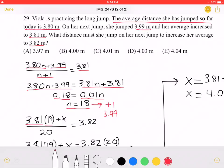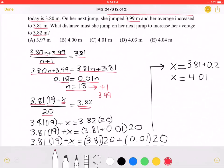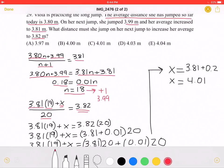19 times her average of 3.81 would be the total distance that she has jumped so far, plus this unknown x, which we're trying to find, over 20, which would be the total number of jumps with this one extra jump. This average we want to equal 3.82. We can cross-multiply, getting that 3.81 times 19 plus x equals 3.82 times 20.